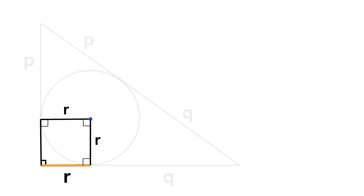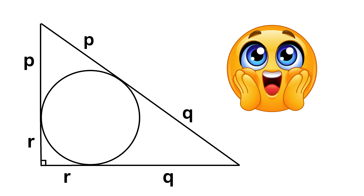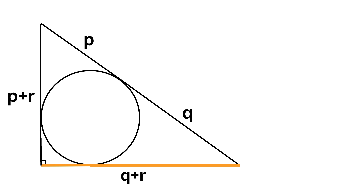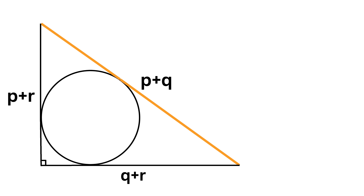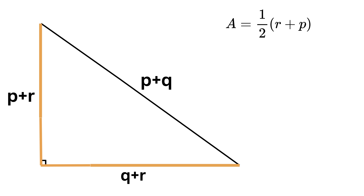This means the remaining sides of the square are also r. The length of one side of the triangle is p plus r, the other leg is q plus r, and the hypotenuse is p plus q. For a right triangle, the area is half times the product of the two legs: ½ × (p + r)(q + r).